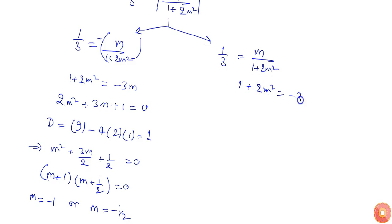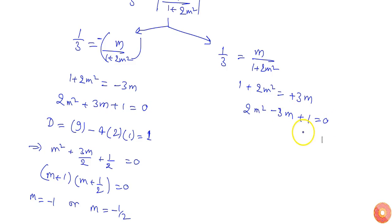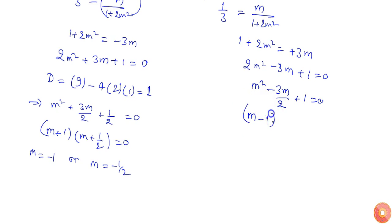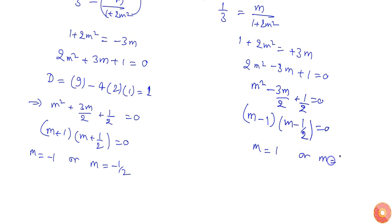From the second case, 1 + 2m² = 3m, so 2m² − 3m + 1 = 0. Factoring gives (m − 1)(m − 1/2) = 0, so m = 1 or m = 1/2.